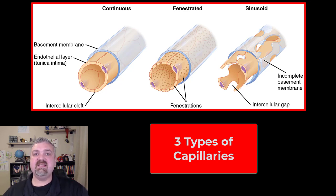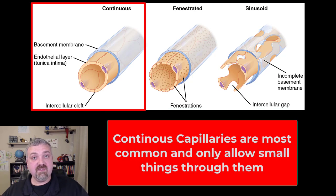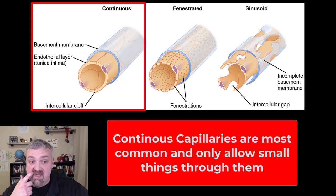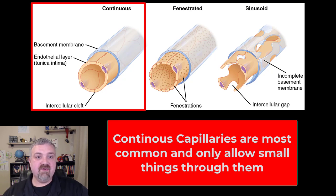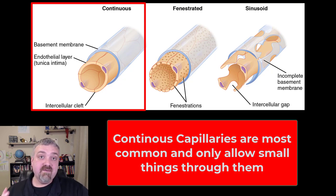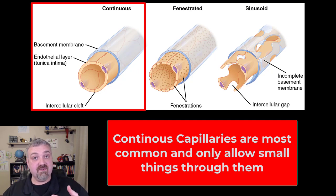The key difference is what size of things they'll allow through. Continuous capillaries are the most common type — most of the capillaries in your body are continuous capillaries. As the name implies, they're continuous. There are no large openings, no holes. So very small things are able to transport through continuous capillaries. Most also have transport vesicles that will carry things in and out.